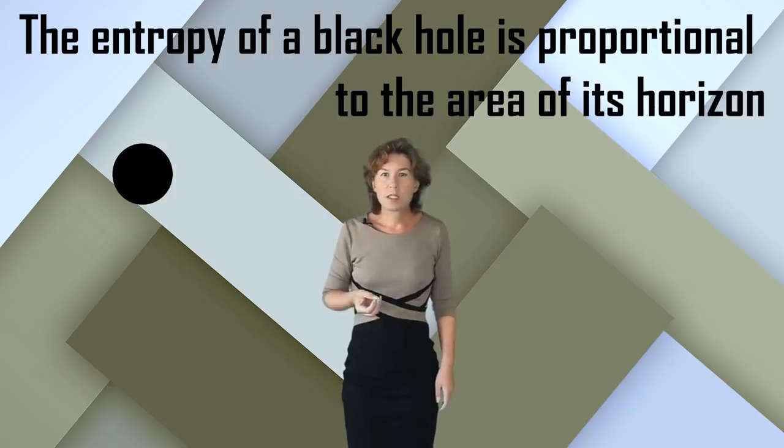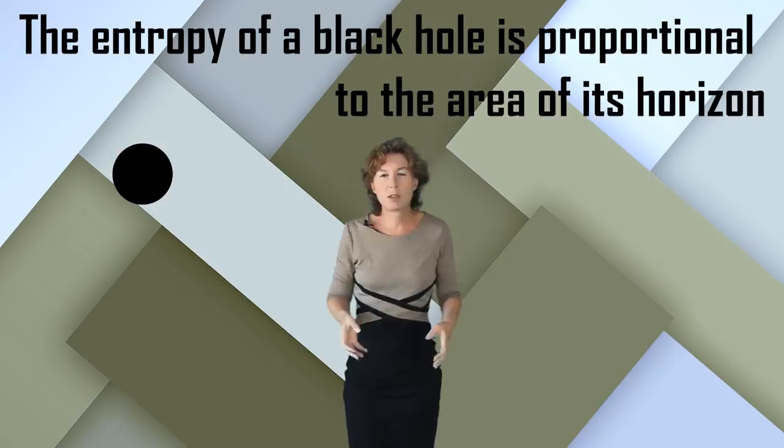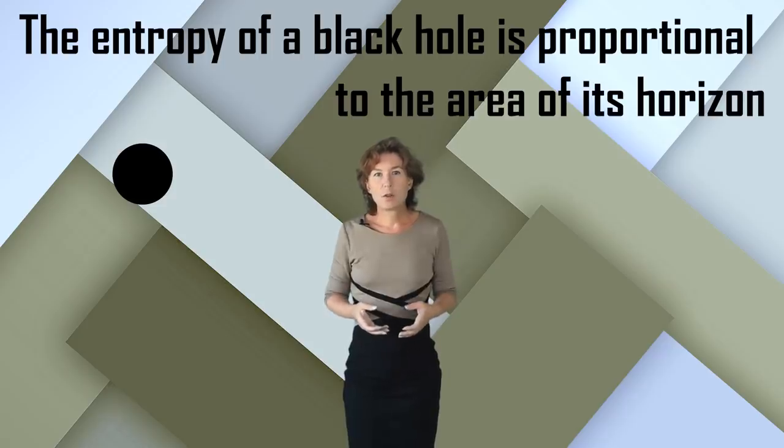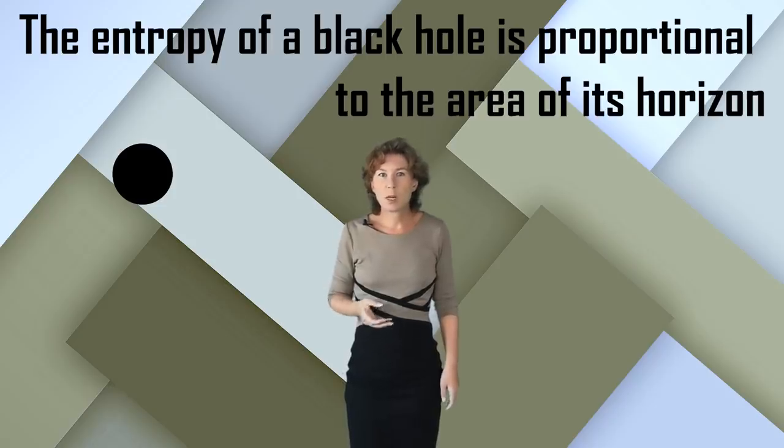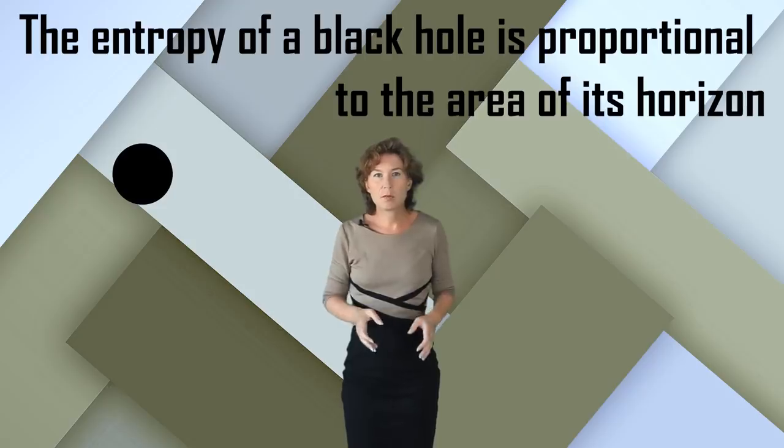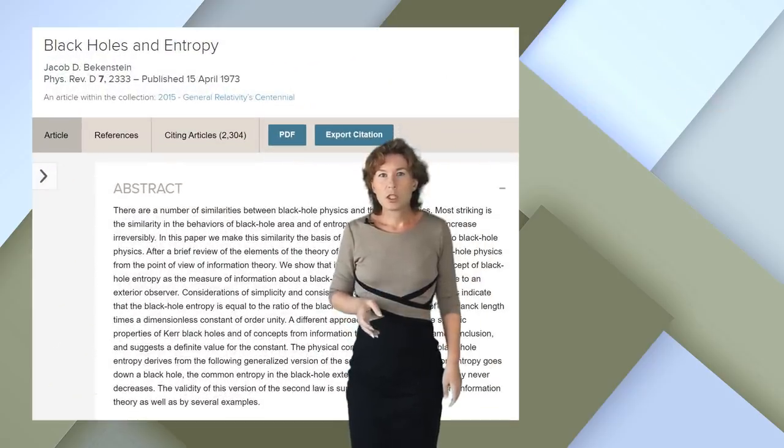So, the entropy basically counts how much information you could stuff into a macroscopic thing if you kept track of the microscopic details. Therefore, the area scaling of the black hole entropy tells you that the information content of black holes is bounded by a quantity which is proportional to the horizon area. This relation is the origin of the holographic principle.